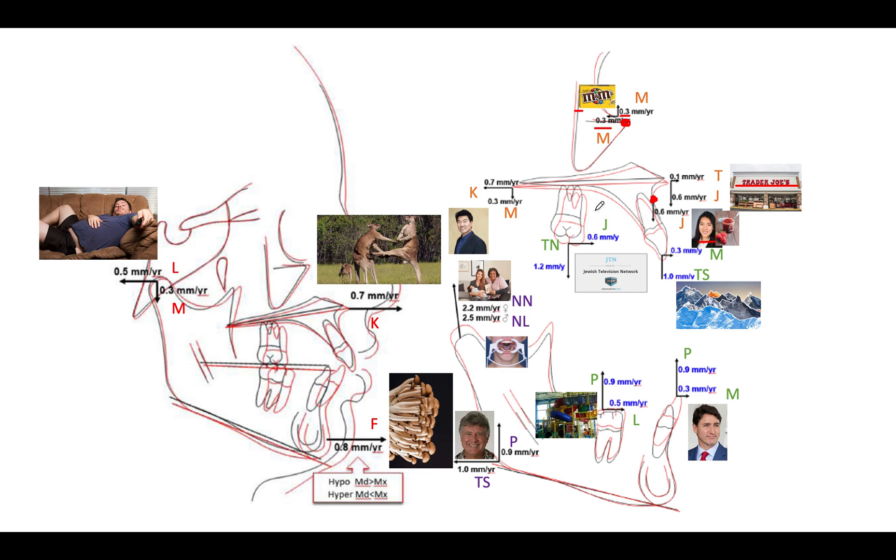So here, let's actually jump to the posterior maxilla. So the PNS goes backward and downward at a rate of 0.7 and 0.3 millimeters. And that's going to be a K and M. So here I was thinking of Korean male. And I was thinking of who do we all know that is a Korean male. So I was thinking of Dr. Moon. So Dr. Moon is going to be the Korean male that symbolizes how the PNS grows.